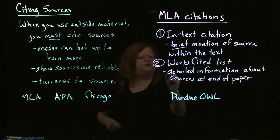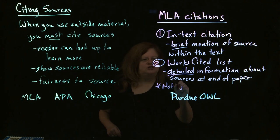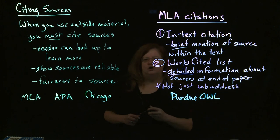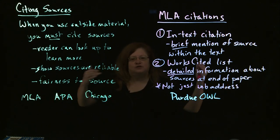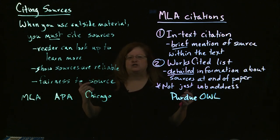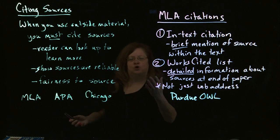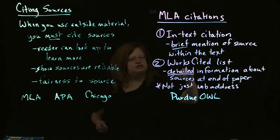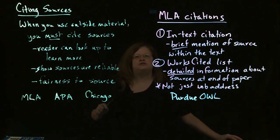With this detailed information, something that's very important: it's not just the web address. A lot of times I'll be reading a paper and when I get to the works cited list at the end, all I see is just a list of web addresses. That's not enough, because that doesn't give me any information about who the source is — so it's not fair to the source, it doesn't give me enough information to look it up and learn more, and it doesn't give me enough information to know the source is reliable. The works cited list is meant to be very complete information so that the reader knows what the source is and knows that source is trustworthy.